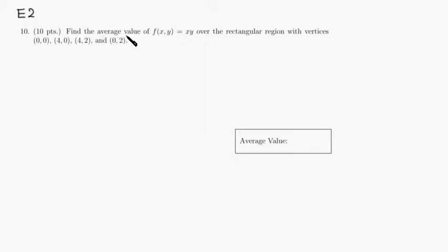So we want to find the average value of this function, f of x, y equals xy, over a rectangular region with vertices at (0,0), (4,0), (4,2), and (0,2), right?